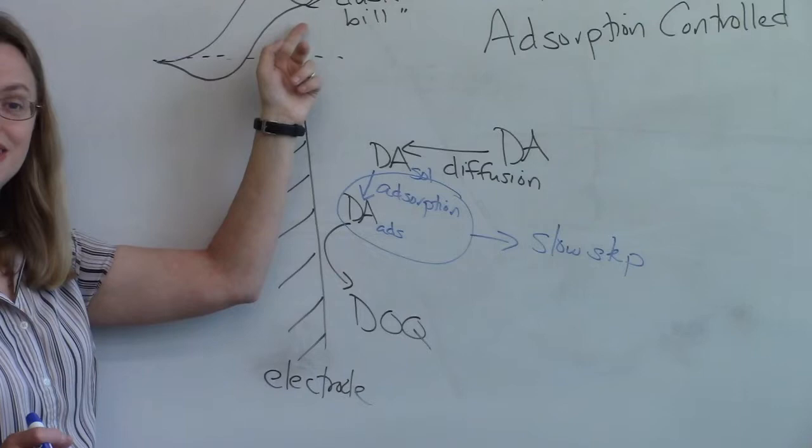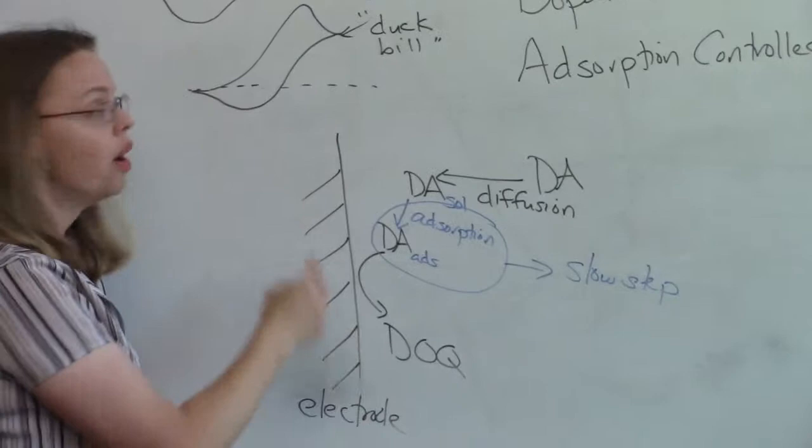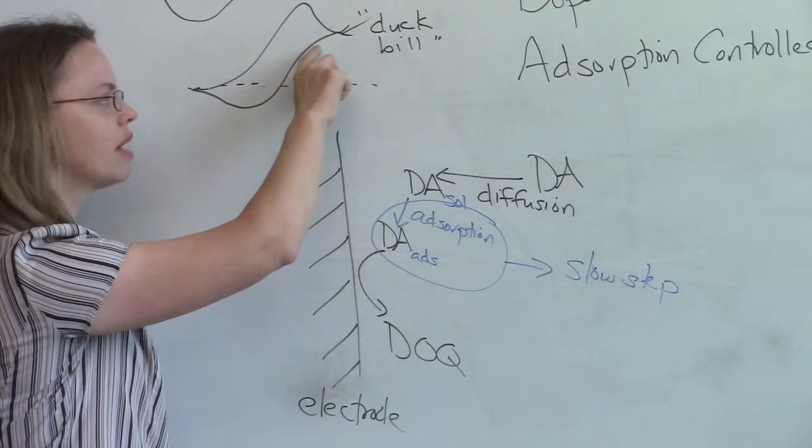So I said before, two segments ago, when we were talking about slow scan CV, that this duck bill starts to come back down here because we're using up the dopamine that was really close to the electrode, but that there's still other dopamine that's diffusing in. So this is diffusion control.